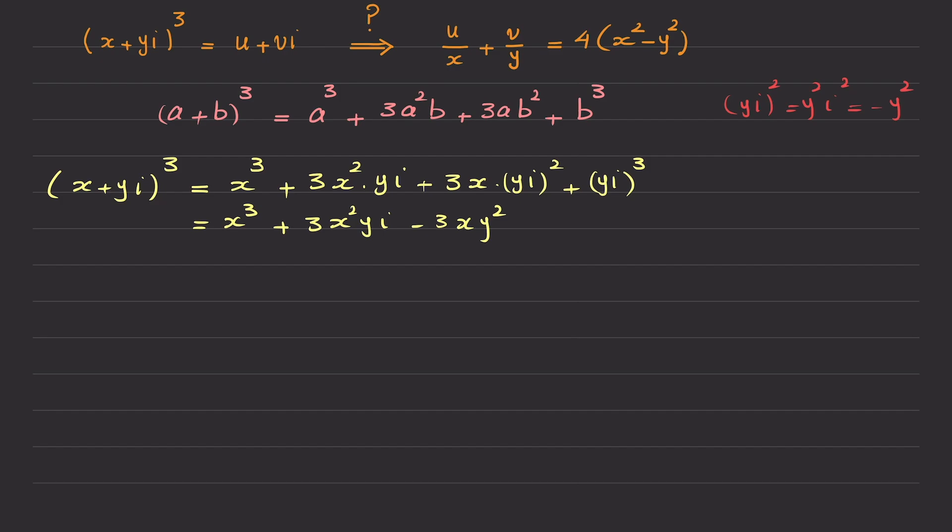For the next one, I have (yi)³. So it becomes y³i³, but i³ can be written as i²·i, but i² is minus 1, so it becomes minus y³i. So I would write it down. Minus y³i.